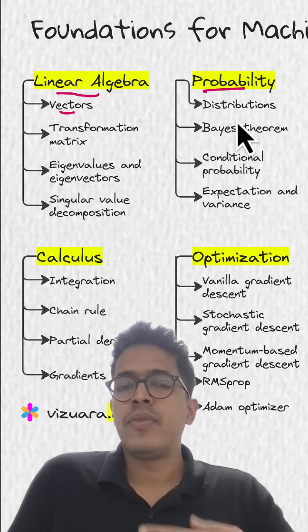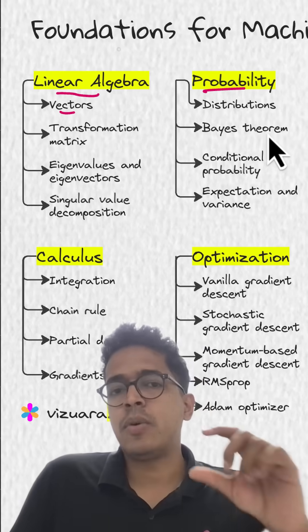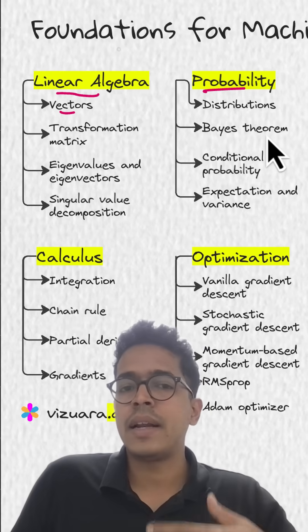Coming to probability, which is the second pillar for machine learning foundations, try to understand probability distributions, Bayes' theorem, and conditional probability.